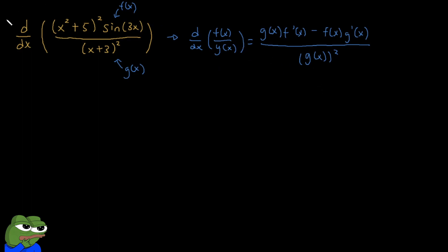We have two missing elements here. We already know g(x) — it's just our denominator — and we know f(x), which is our numerator. Now we want to focus on finding f'(x) and g'(x), because both of these are unknown. After we find those, we'll be able to fill in this formula. So let's start by taking the derivative of the higher function f(x).